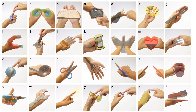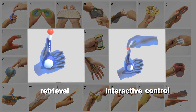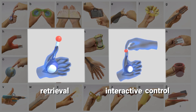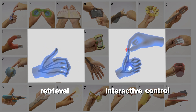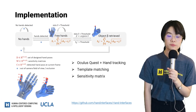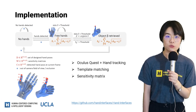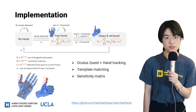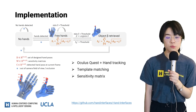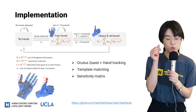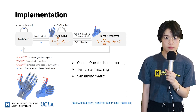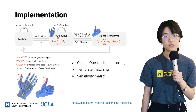With this design process, we created 28 hand interfaces. These hand interfaces can be manipulated for tasks that involve interactive control, supporting both interactive control and retrieval. We implemented our idea with a state machine in Unity using Oculus Quest. We used thresholds to transition between states, and sensitivity matrices to improve robustness to small changes in finger joints. We also open-sourced our project on GitHub. Please refer to our paper for more implementation details.